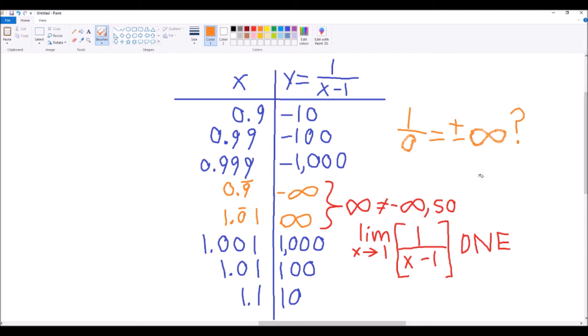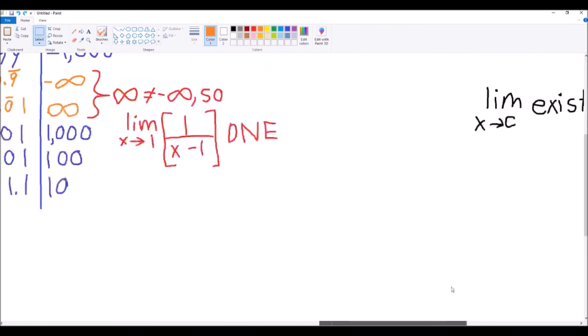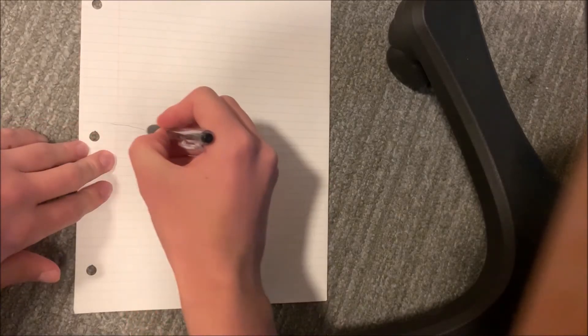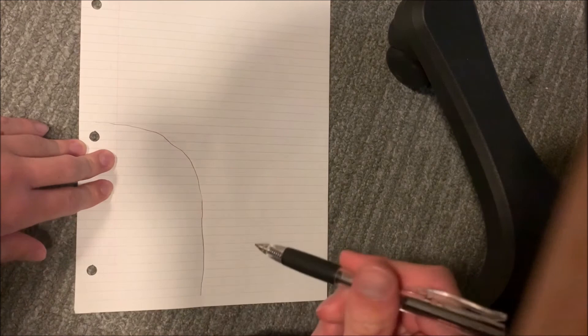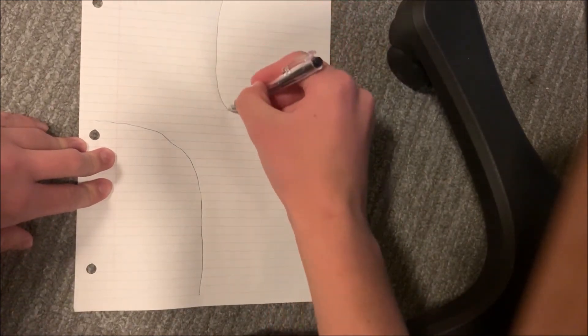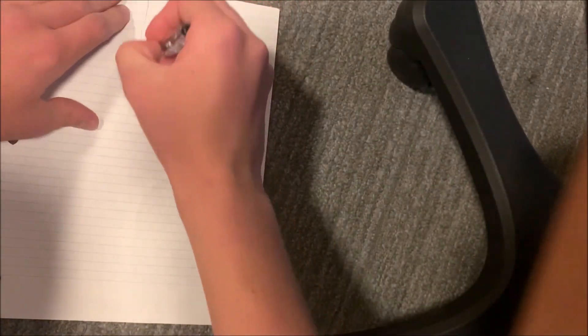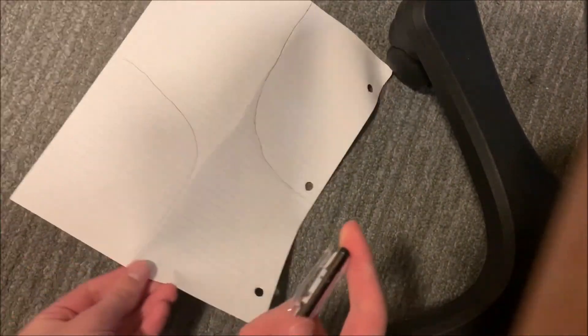But unfortunately, this does mean that f of x equals 1 over x minus 1 cannot get the limit stamp of approval, or the limit seal of approval, and cannot join the function party. Once you reach negative infinity, you have to pick up the pencil and move up to positive infinity to keep drawing the graph. Or, I guess it could go onto the paper, but even with taking the pencil analogy way too literally, the sharp edges of the paper prevent you from pulling off the sorcery.